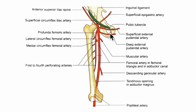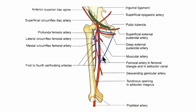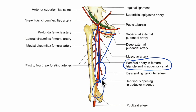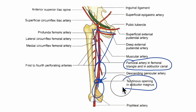Next, let's understand the extent and course of the femoral artery. The femoral artery passes downwards and medially, first in the femoral triangle and then in the adductor canal. At the lower end of the adductor canal — at the junction of the middle and lower thirds of the thigh — it passes through an opening in the adductor magnus muscle to become continuous with the popliteal artery.